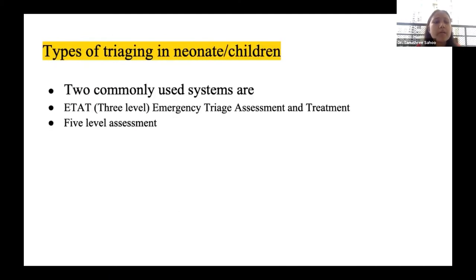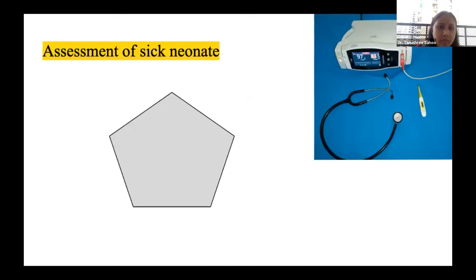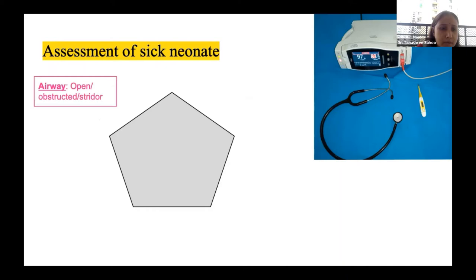The ETAT process for assessment of sick newborns has five components — A, A, B, C, C, D — known as the pentagon of assessment. A for airway: at the time of admission we check whether the airway is open or closed, whether there is any obstruction, and whether there are added sounds such as gurgling or stridor.